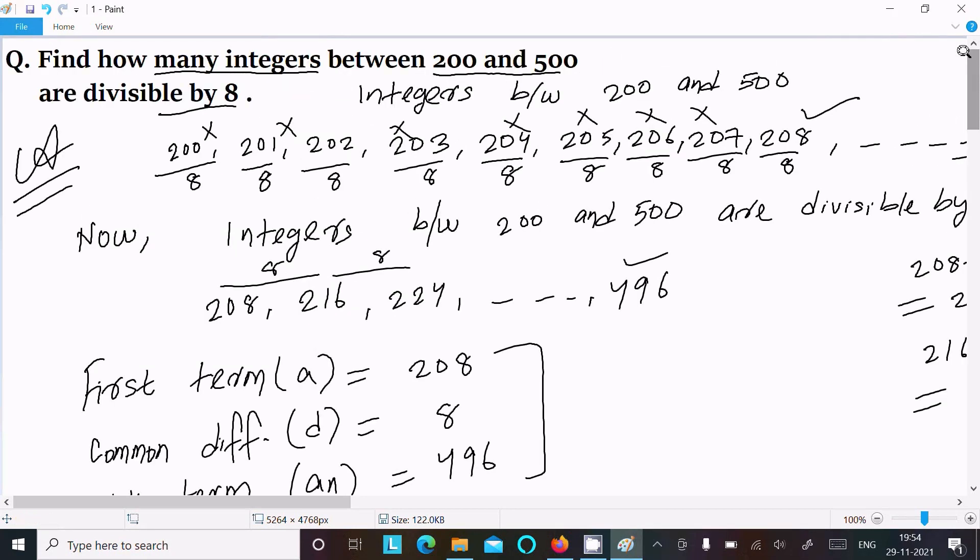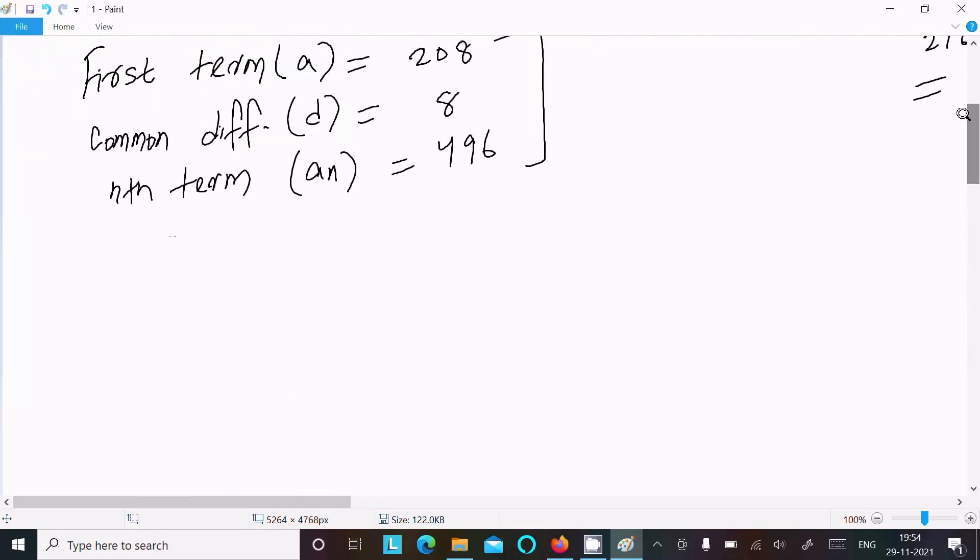Now here last term, that is nth term, that is an equal to 496. So this is what we get here. After that, we need to find how many terms, we need to find the n.